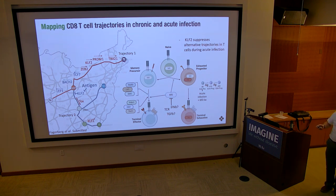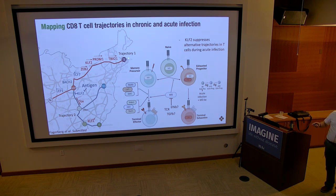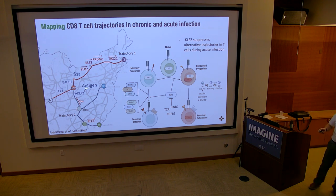Unlike most of these other transcription factors — say TCF7 or LEF1, which when knocked out produce effector cells and are heavily expressed in memory precursor cells — KLF2 is actually highest expressed in effector cells and highly expressed throughout the effector lineage. So we actually think its role is in preventing alternative differentiation and keeping cells on the appropriate trajectory. When you knock it out, they have the ability, based on the signals they're seeing, to become exhausted cells even within the spleen of an acute infection.